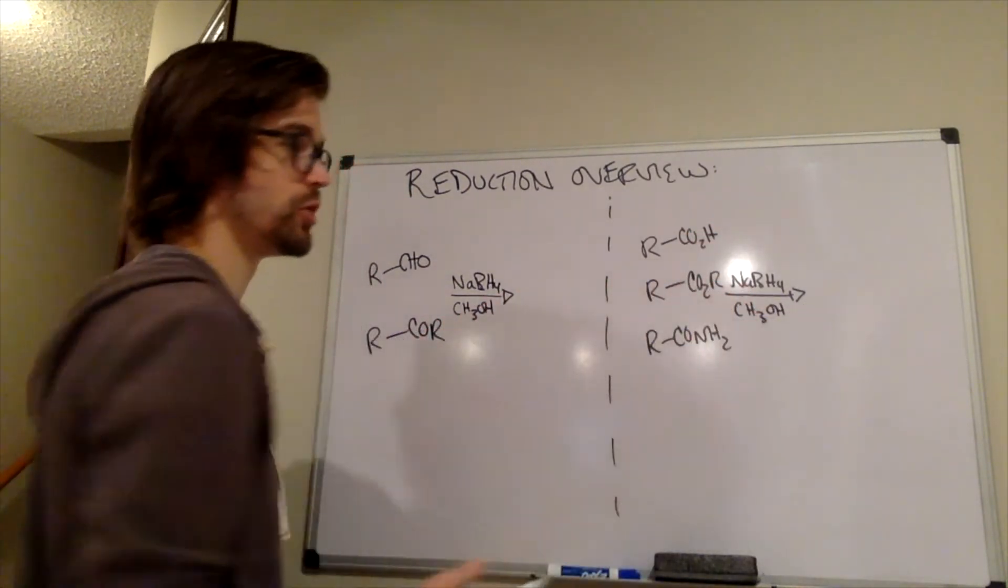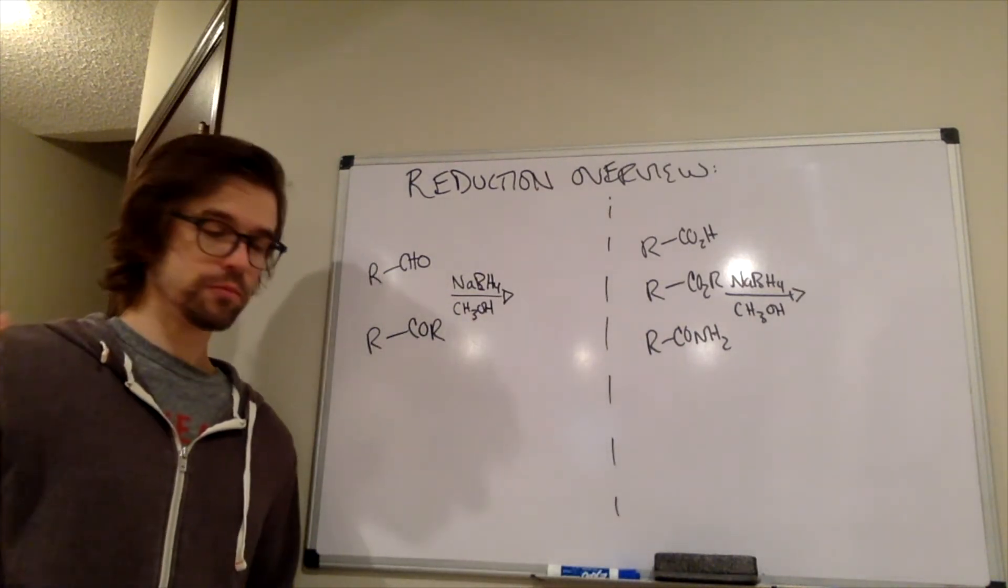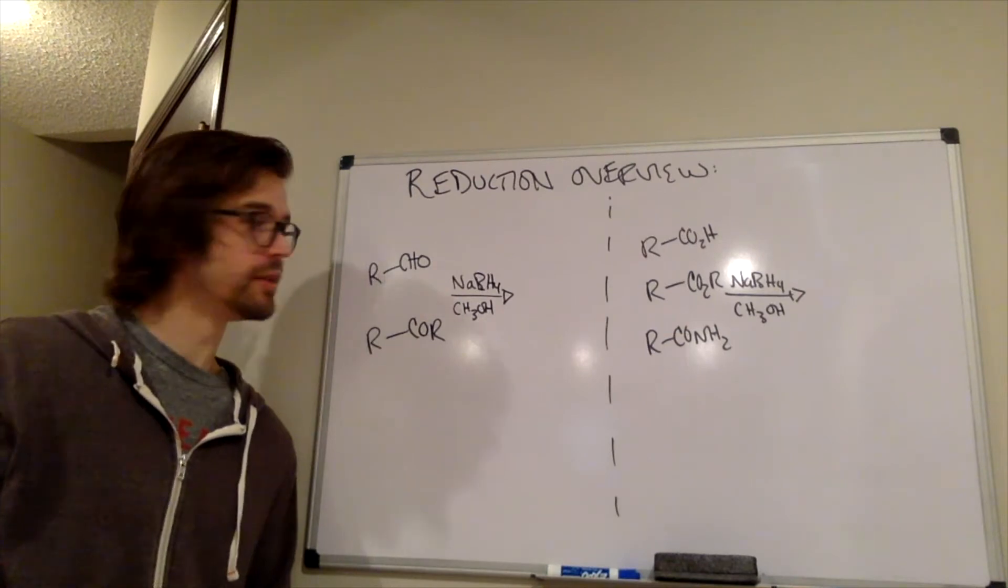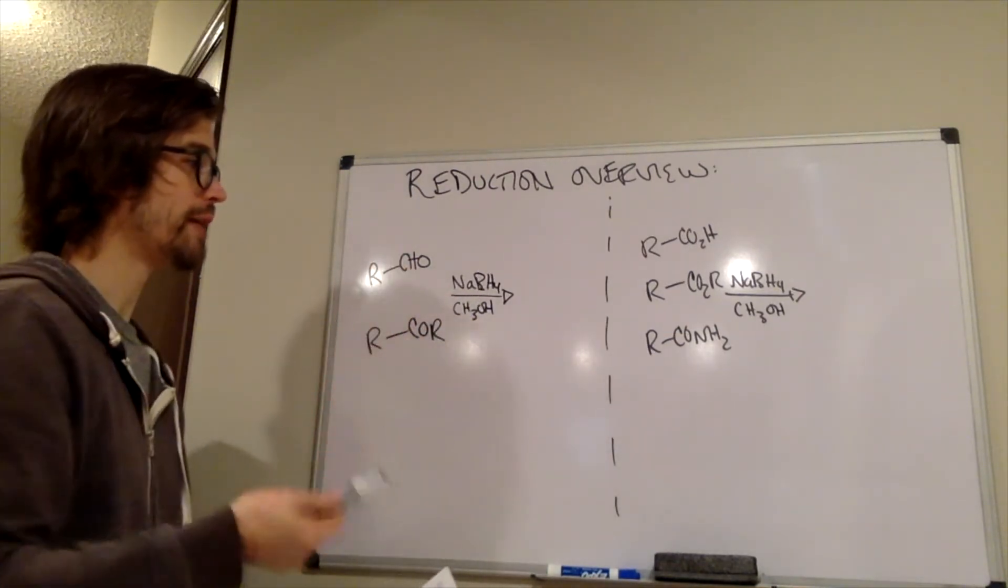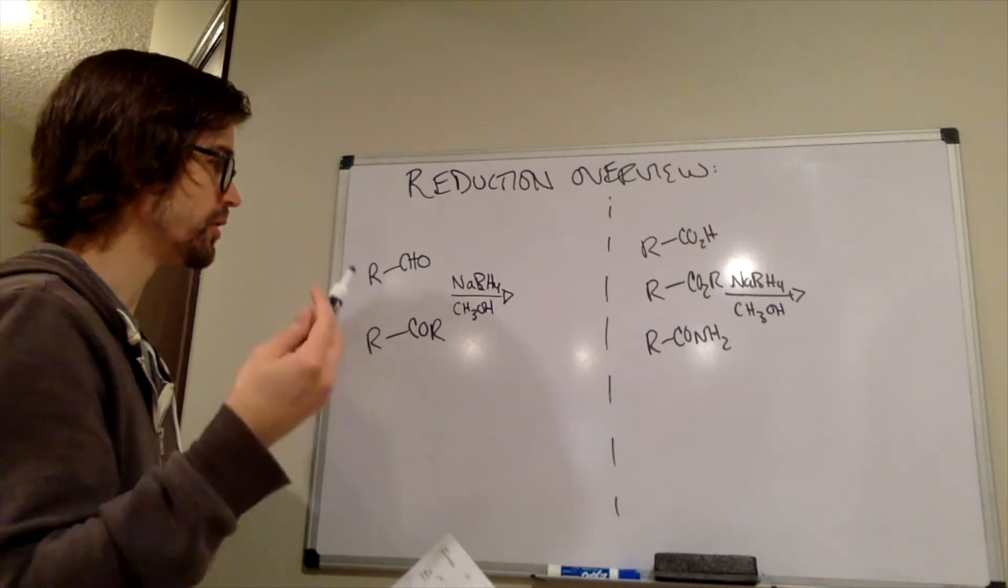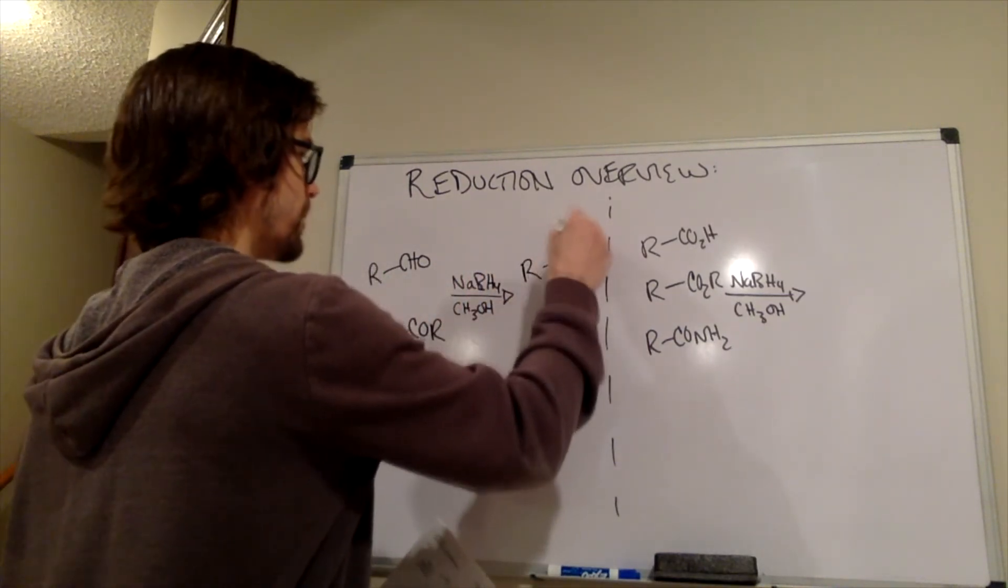And in both cases, we're trying to react them with sodium borohydride, our less or less reactive reductant. So sodium borohydride reacts really well with the more reactive carbonyl derivatives. The aldehydes would turn to primary alcohols.